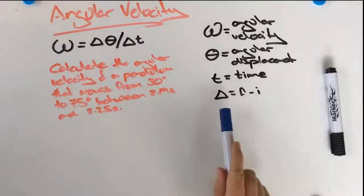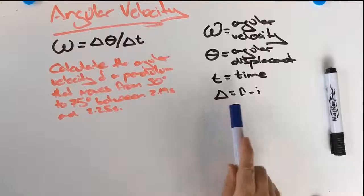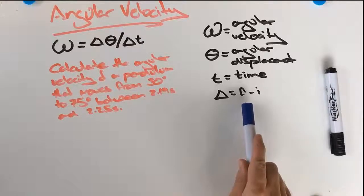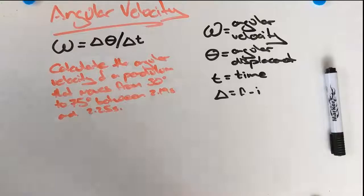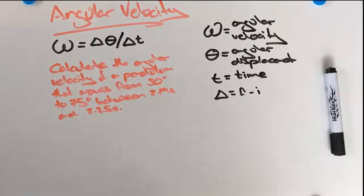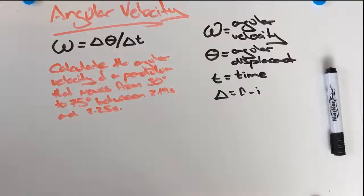Just to remind ourselves, change in — the way we can work it out is our final minus our initial. So if we get a question that states: calculate the angular velocity of a pendulum that moves from 30 degrees to 75 degrees between 2.19 seconds and 2.25 seconds.